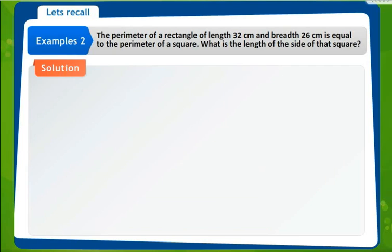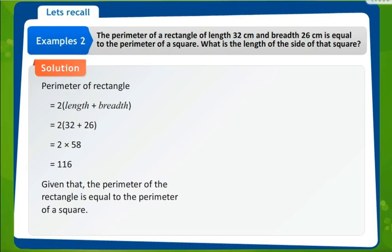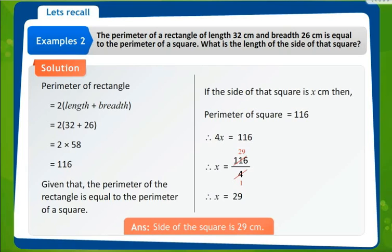Perimeter of rectangle equals perimeter of square. Perimeter of rectangle is 2 times length plus breadth, that is 2 into 32 plus 26, which equals 2 into 58, which equals 116. Now given that the perimeter of the rectangle equals the perimeter of the square, and perimeter of a square equals 4 times side, suppose the side is x, then 4x equals 116, so x equals 116 upon 4, which gives x equal to 29. So the length of the side of the square whose perimeter equals the perimeter of the rectangle is 29 centimeters.